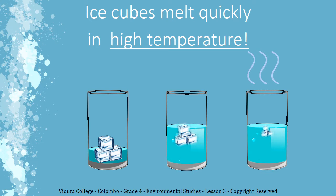Did you notice something about the temperature of the water in the vessels? In the first vessel with just ice cubes, the temperature is low so it melted slowly. In the second vessel, the temperature is slightly higher, so it melted a bit faster. And in the third one with boiled water, ice cubes melted faster than the other two since its temperature is high. So what is the conclusion we can draw from these changes? Ice cubes melt quickly at high temperature.